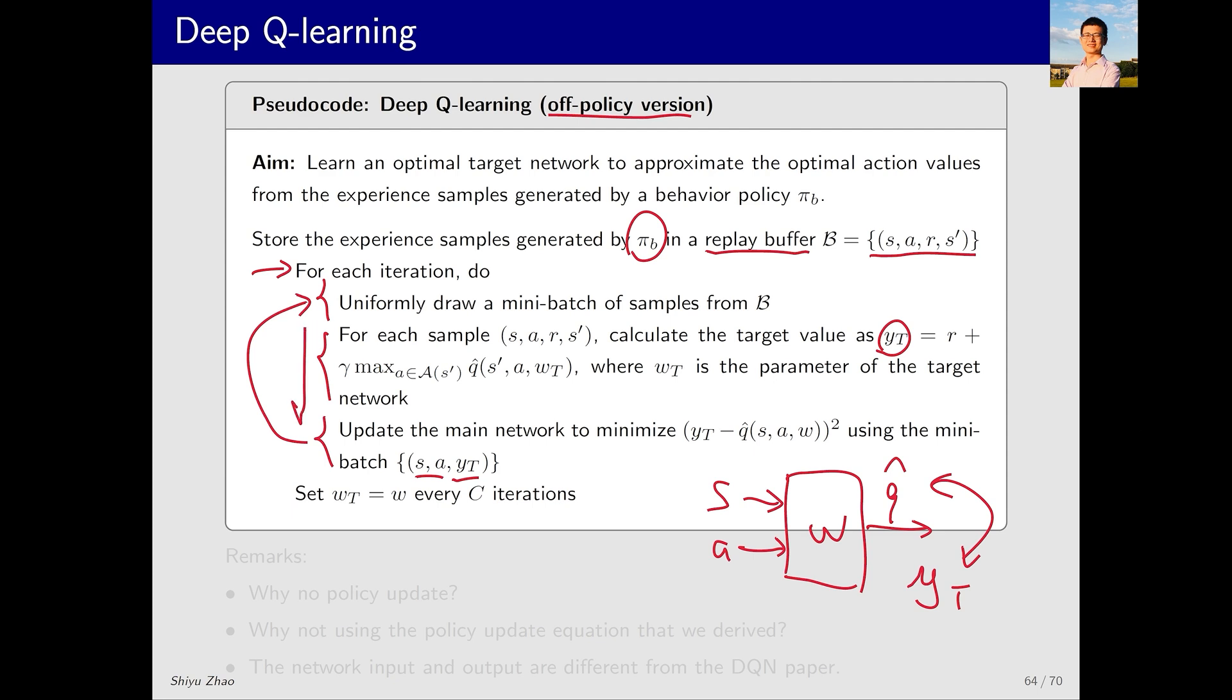In the next iteration we repeat this process. However, after updating w for c iterations, we copy the value of w to w-bar to update the target network. This forms the loop, and that's the pseudocode for deep Q-learning.